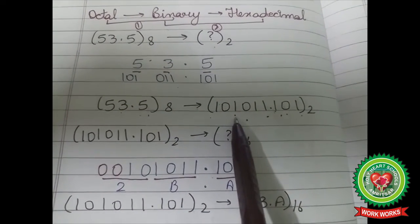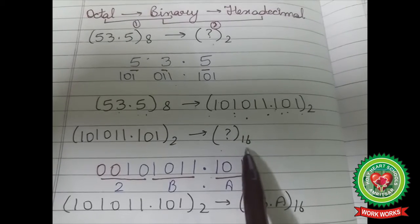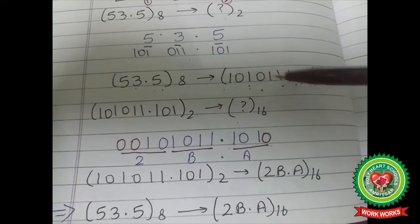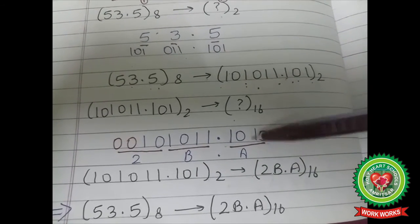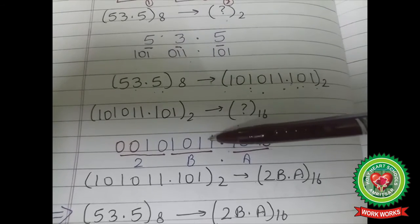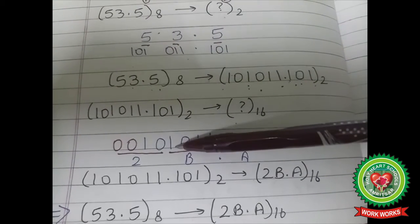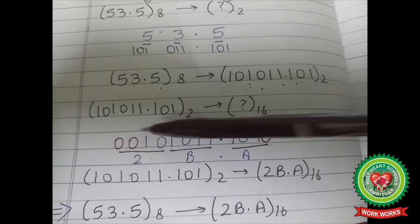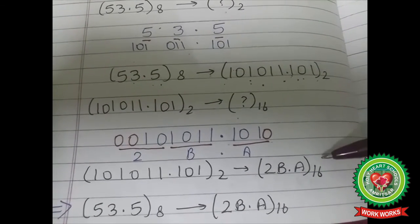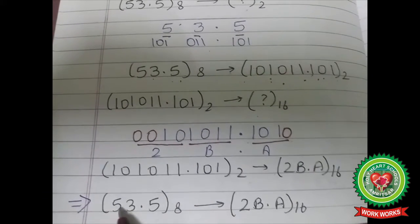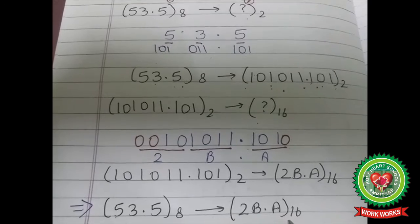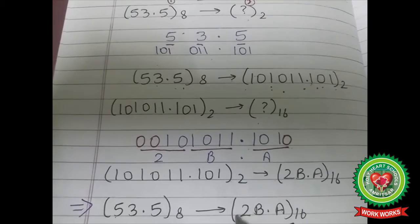The second step is to convert this binary number into hexadecimal by grouping the digits into groups of four. After grouping, the hexadecimal number becomes 2B.A. So octal number 53.5 is converted into hexadecimal number 2B.A.